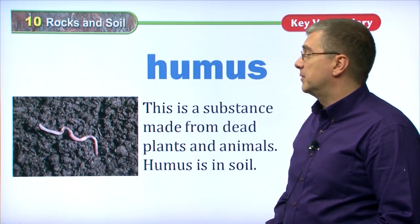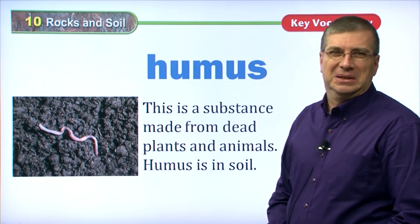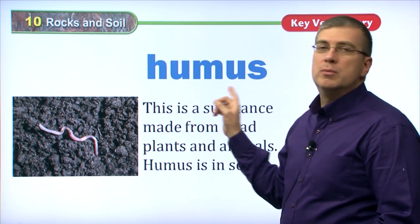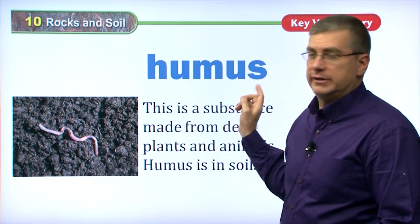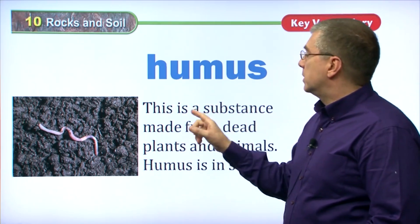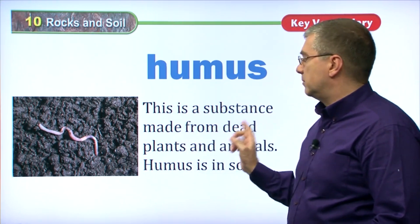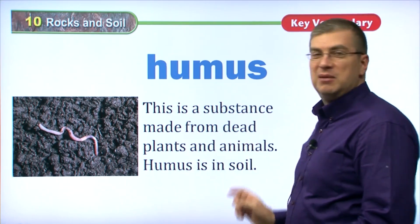Another type of soil — and it's kind of yuck — is humus. Humus is a substance made from dead plants and animals. Dead plants and animals will decompose. They will change their form over time in the soil.